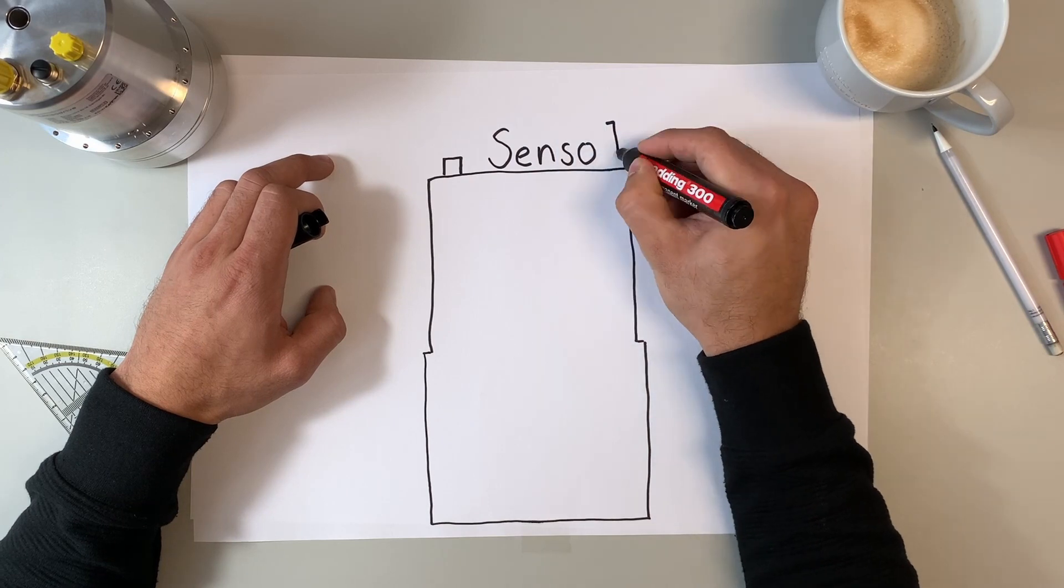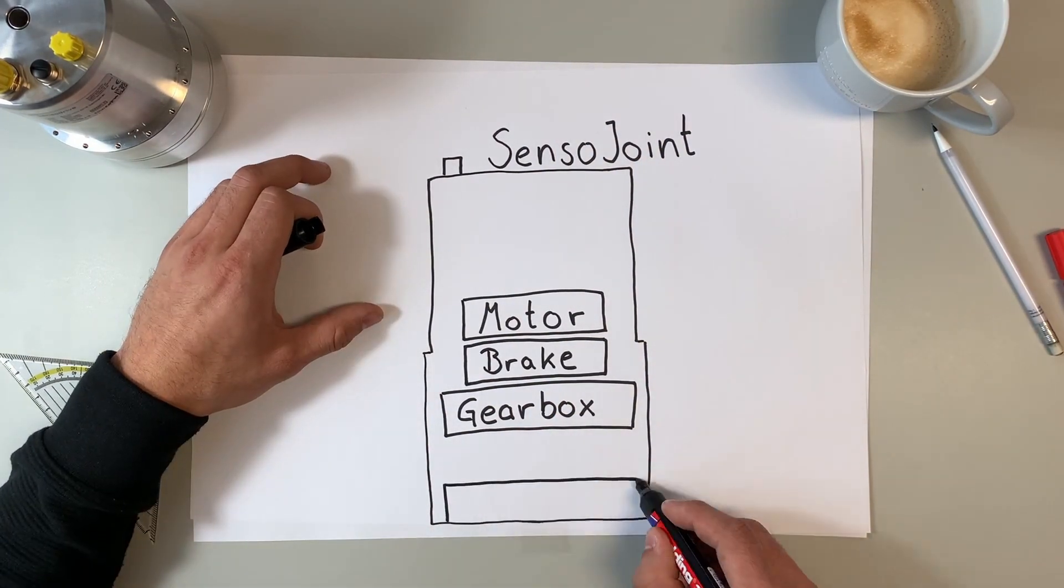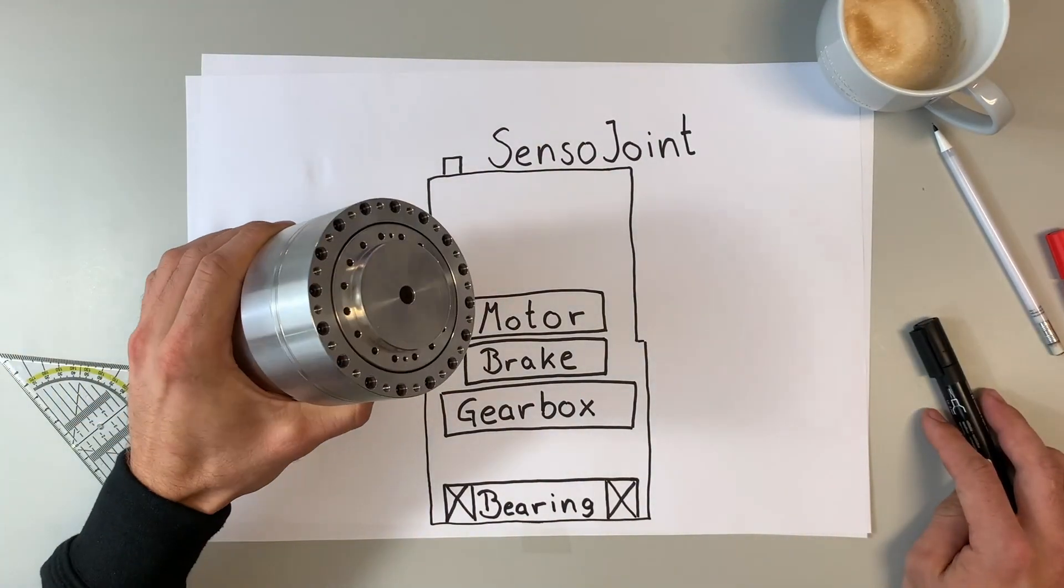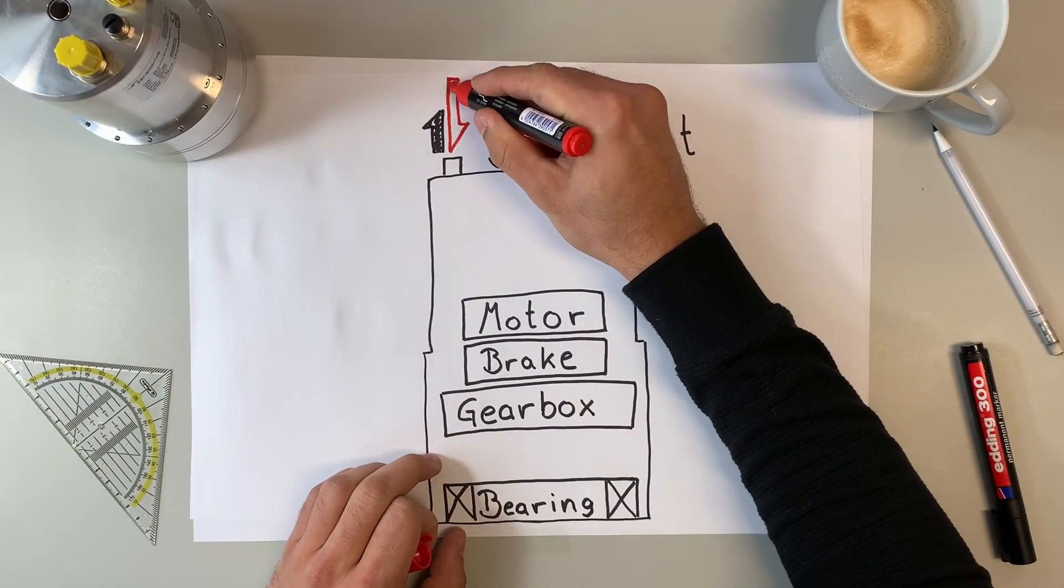Of course, a motor, a gearbox, a brake, and an output bearing are integrated. The arm segments of the cobot can be attached to the flanges. The control is done via EtherCAT, and of course you will find a precise torque sensor and two position sensors inside a sensor joint.